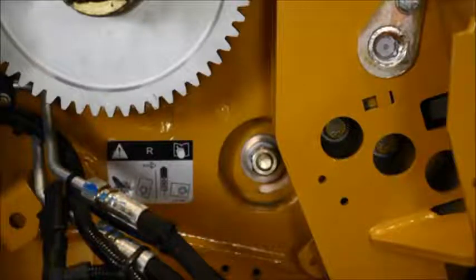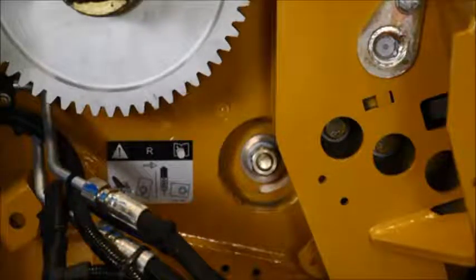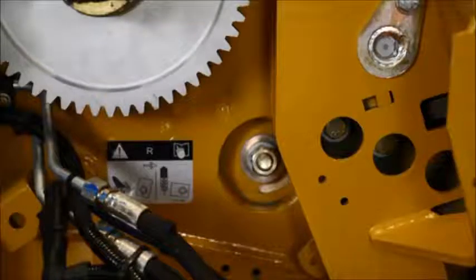We loosen up the jam nut, tighten them up against the block, and then repeat the steps on the left side of the feeder house.